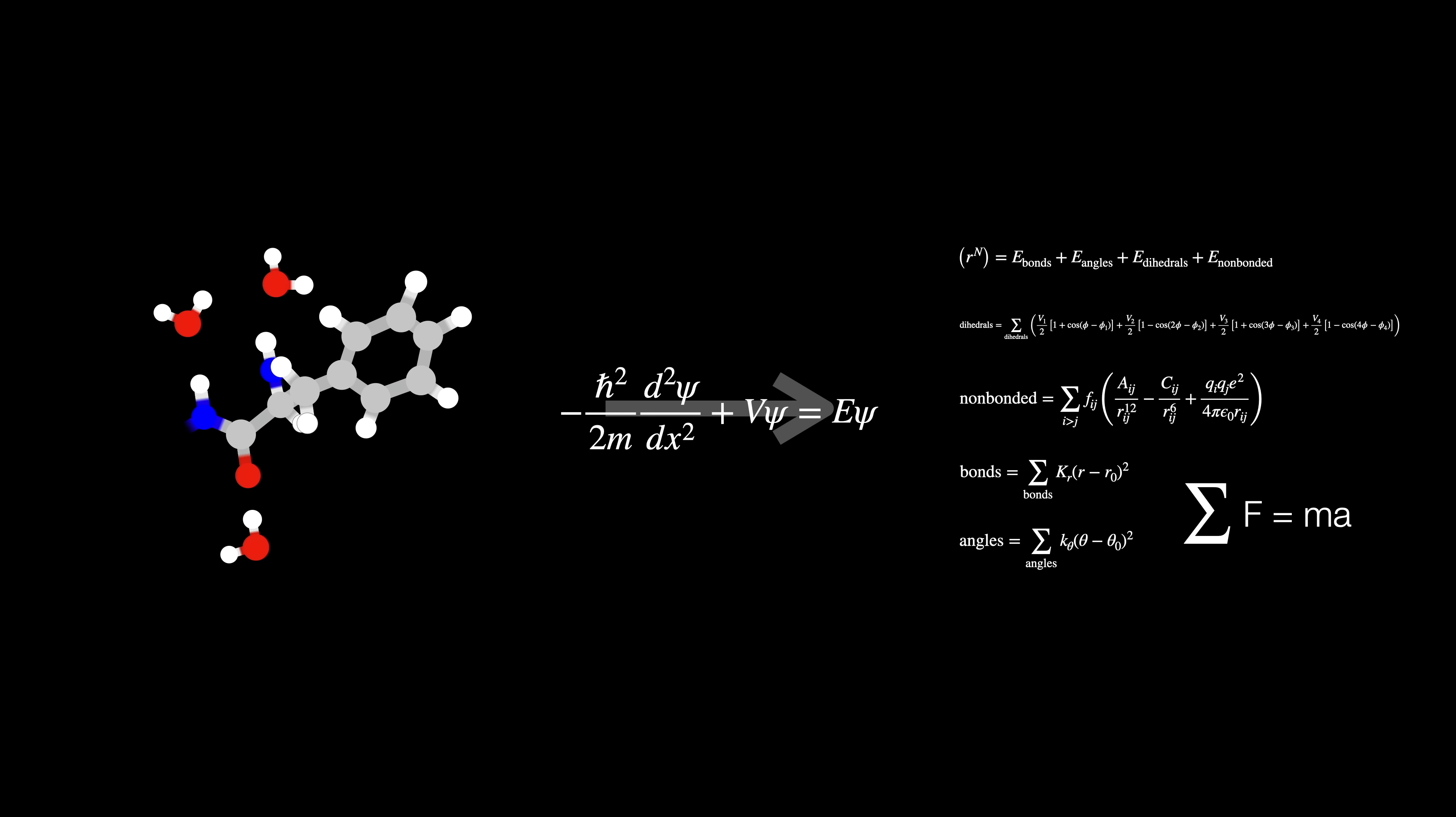This means that certain phenomena are excluded from this type of simulation, such as breaking chemical bonds. You can use QMMM if you really want to do that. There are of course more types of forces, but we're only covering the four major ones.